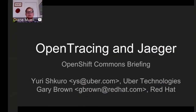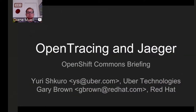Hello and welcome again to another OpenShift Commons briefing. Today we have a really interesting new open source project that you probably haven't heard about — Jaeger. You probably have heard about Uber, and we're really pleased to have Yuri with us, one of the core contributors to Jaeger. He's going to tell us about how all this works with open tracing, Prometheus, and lots of other aspects of distributed tracing today. We also have with us from Red Hat, Gary Brown, another contributor to the project.